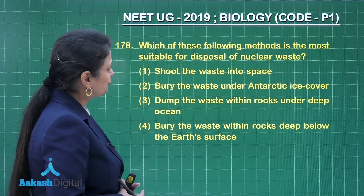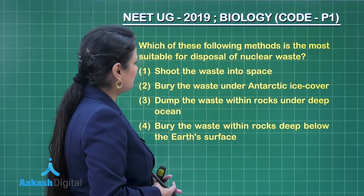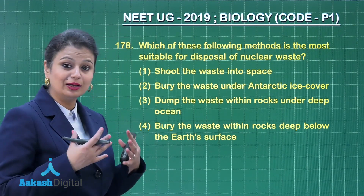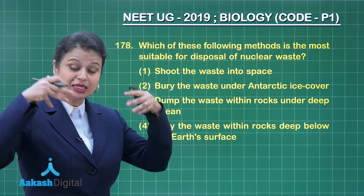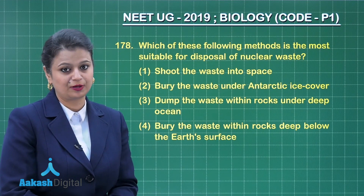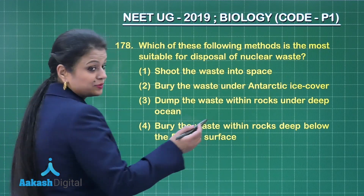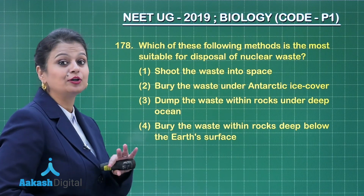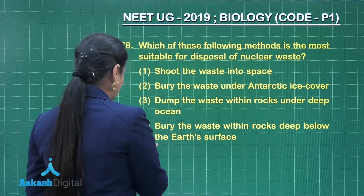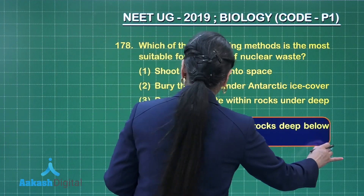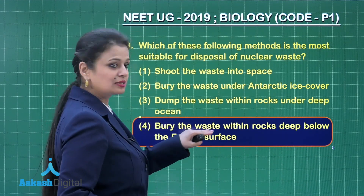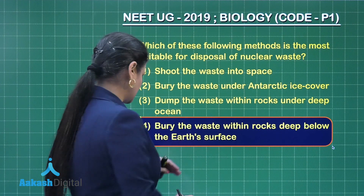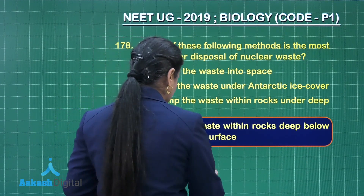Question 178. Which of the following methods is the most suitable for disposal of nuclear waste? The nuclear waste is buried within rocks deep inside the earth's surface. The option associated with this is option number 4 — bury the waste within rocks deep below the earth's surface. So, this is our right answer.